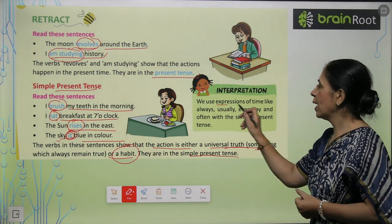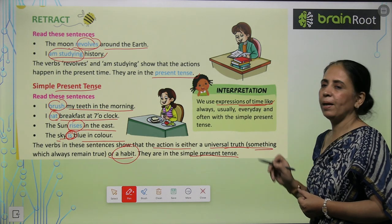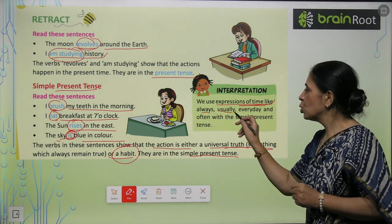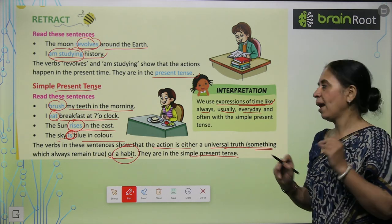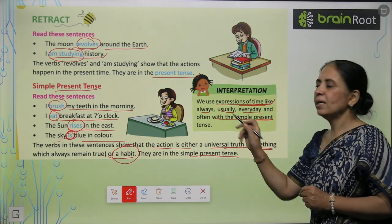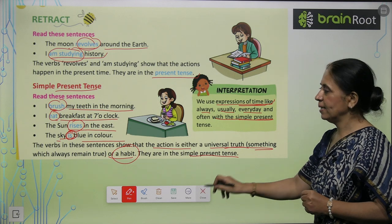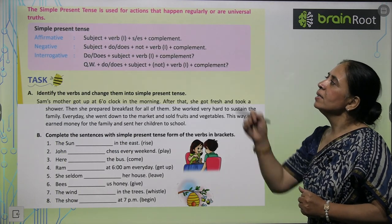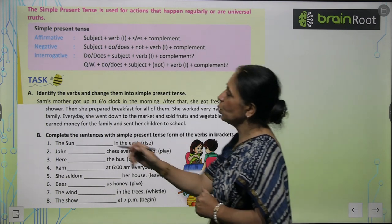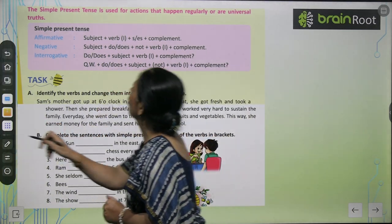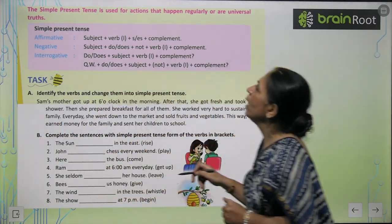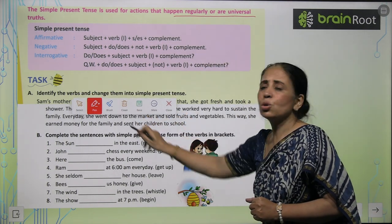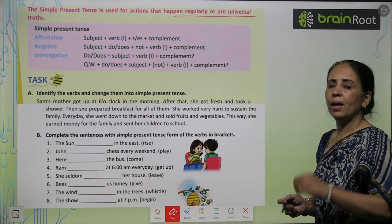We use expressions of time like always, usually, everyday, and often with simple present tense. Simple present tense is used for actions that happen on a regular basis, or for universal truths.